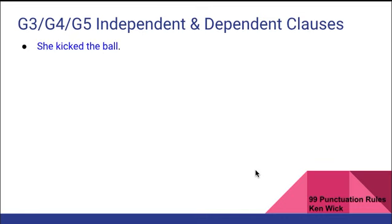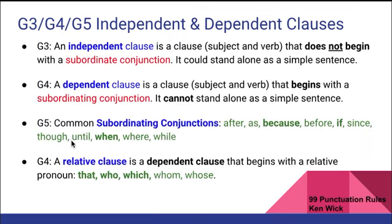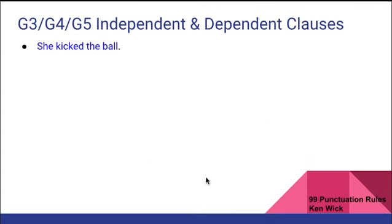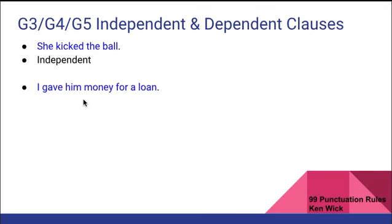Let's go through some exercises to determine if clauses are independent or dependent. Here we have a clause because we have a subject and a verb. Does it start with a subordinating conjunction? The answer is no, so this is an independent clause. Next example: 'I gave him money for a loan.' You have a subject and a verb. Everything else is a prepositional phrase or a direct or indirect object. This does not start with a subordinating conjunction, therefore it is an independent clause.